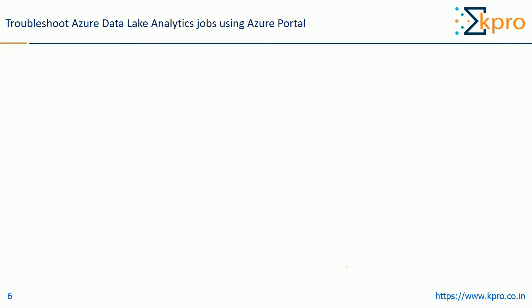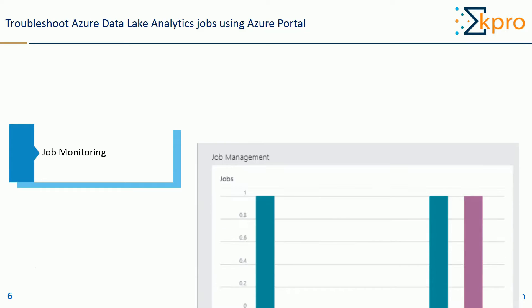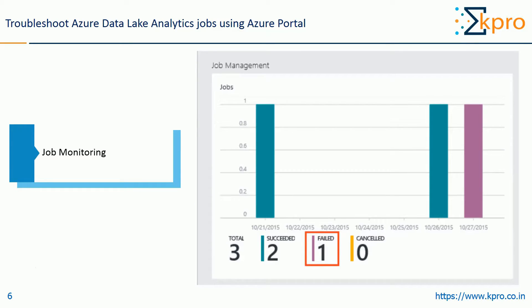Next, troubleshoot Azure Data Lake Analytics jobs using the Azure Portal. The job management gives you a glance of the job status — notice the Failed status, Success, how many are total, and how many are cancelled. Click the Job Management title to see the jobs, which are categorized as Running, Queued, and Ended. You can see your failed jobs in the Ended section. When you have a lot of jobs, you can filter based on success or failed criteria.